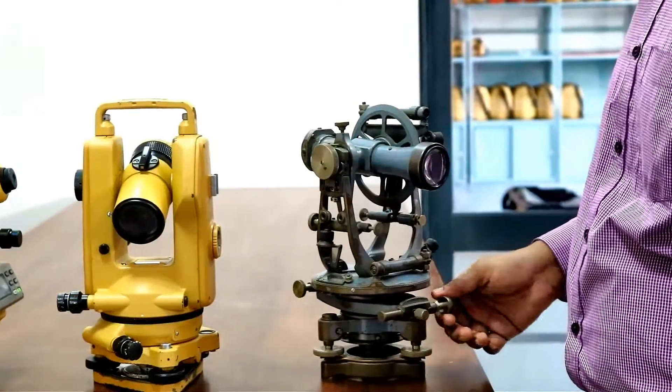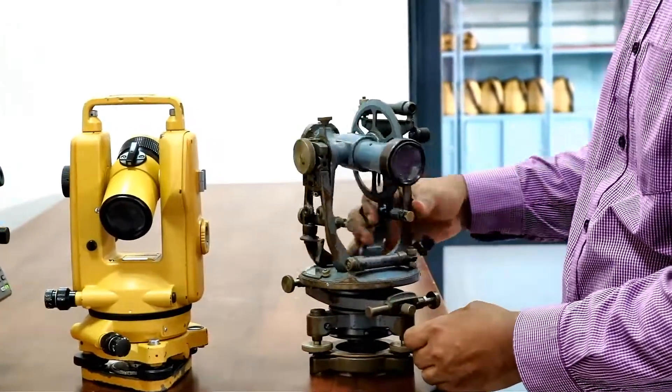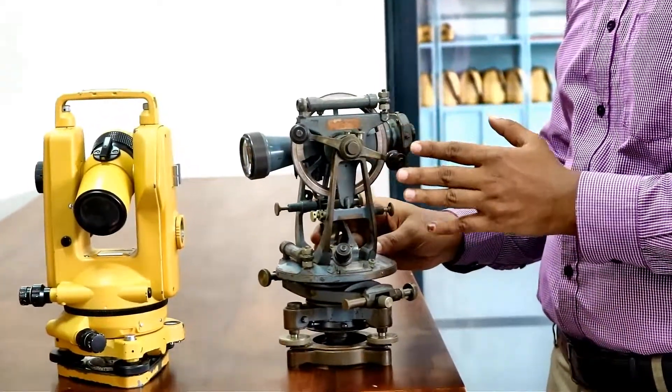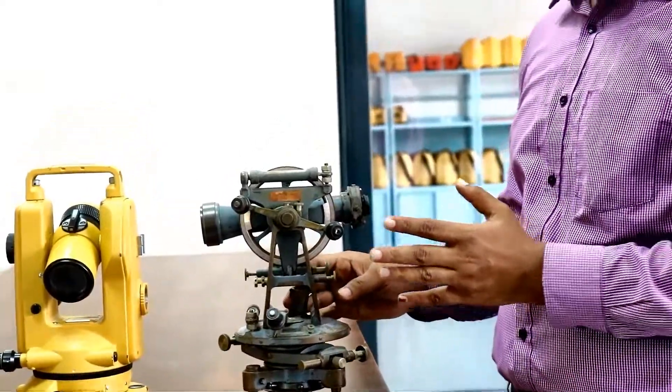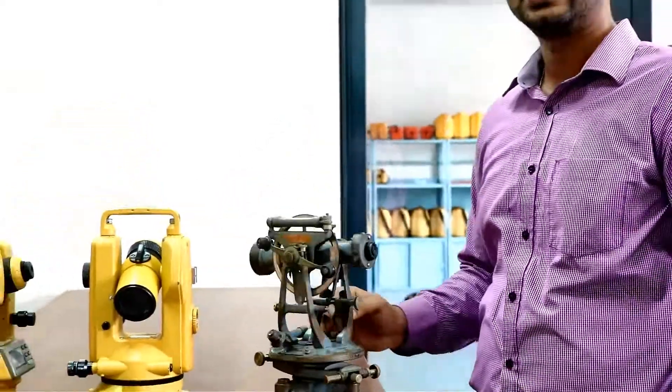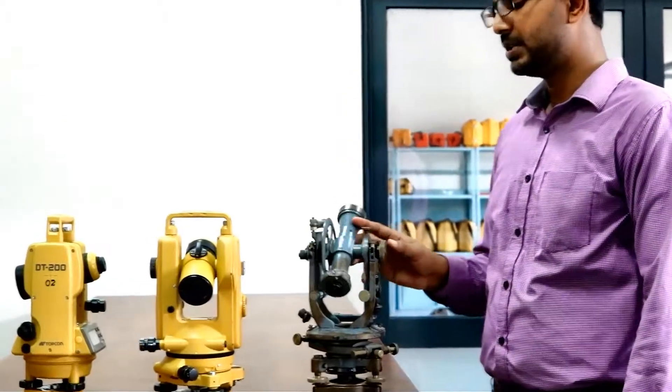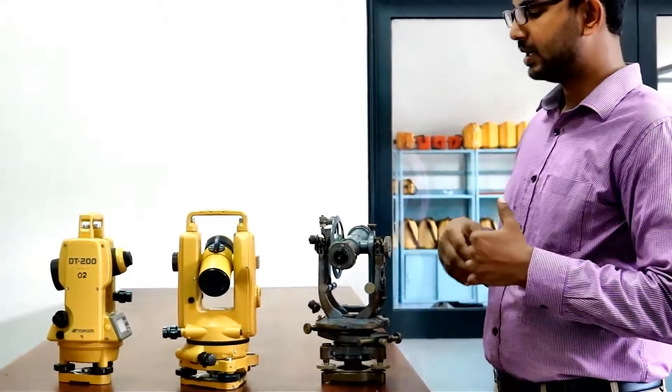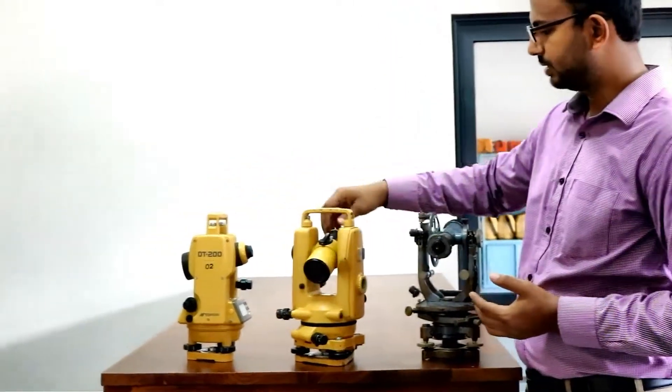Like in the modern instruments, there are diaphragm screws in the old ones. And this vernier transit theodolite was very famous in 1988. Almost all the surveyors use vernier transit theodolite to do surveys. Still this vernier transit theodolite is very famous but it is in a modern form. So this is one of the modern forms of vernier transit theodolite.